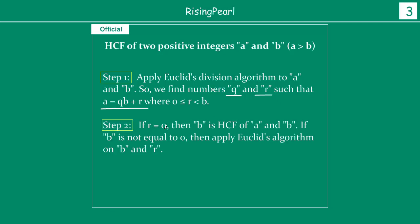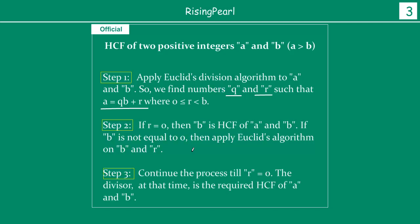After applying the algorithm, we evaluate: is the remainder R equal to zero? If yes, then B is the HCF of A and B. If R is not equal to zero, we apply Euclid's algorithm again but now to B and R — so B becomes the new A and the remainder becomes the new B. We continue this process until R becomes zero, at which point the divisor is the required HCF.